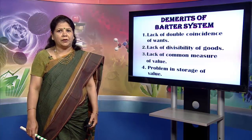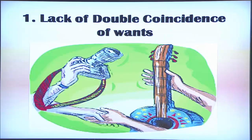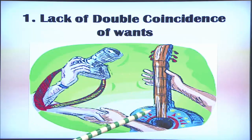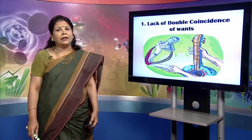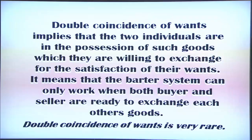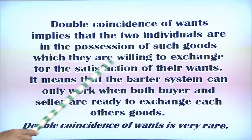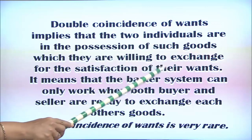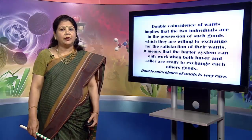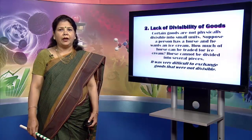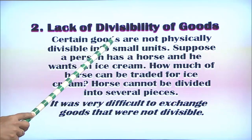The first problem was the lack of double coincidence of wants. If somebody needed to purchase a camera and had a guitar to barter for it, they needed to find someone who needed a guitar and was willing to sell the camera. Double coincidence of wants implies that two individuals possess goods they are willing to exchange for mutual satisfaction — it can only work when both buyer and seller are ready to exchange each other's goods, which is very rare.